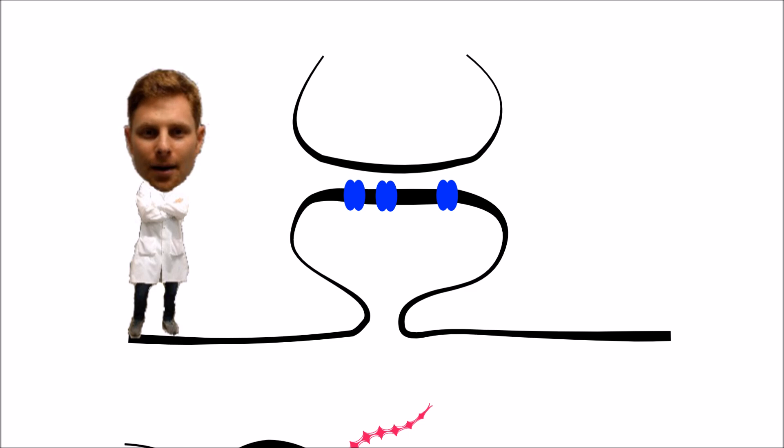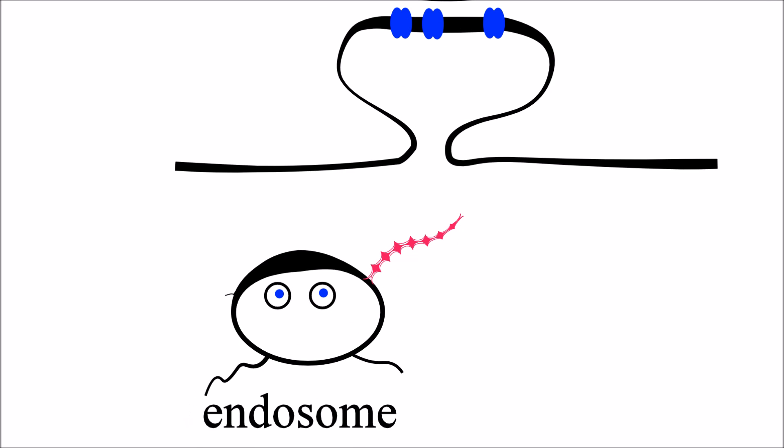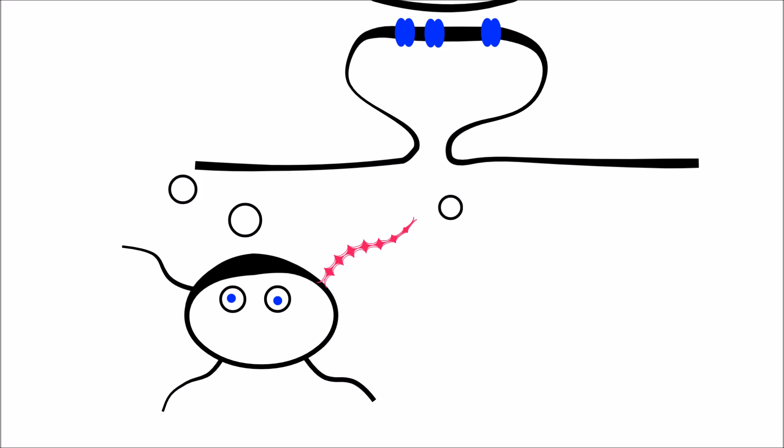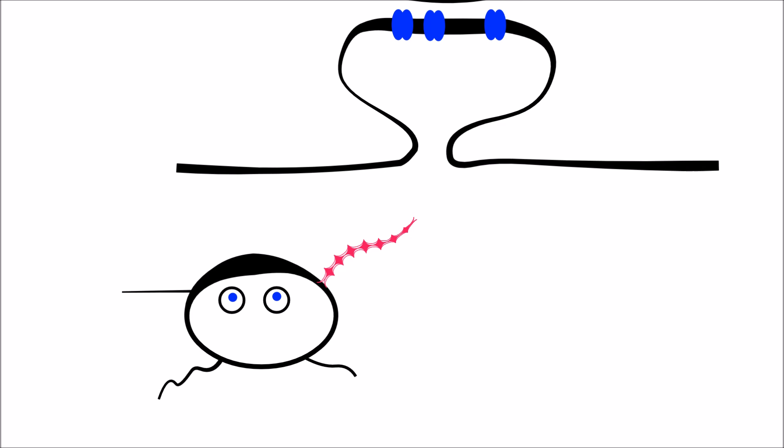So what does the retromer do? The early endosome where the retromer works is an internal organelle responsible for routing transmembrane proteins to other organelles where they can either function or are destroyed. As most membrane in the early endosome comes from the cell surface, early endosomes return most of the membrane, and also cargo in that membrane, back from once it came.